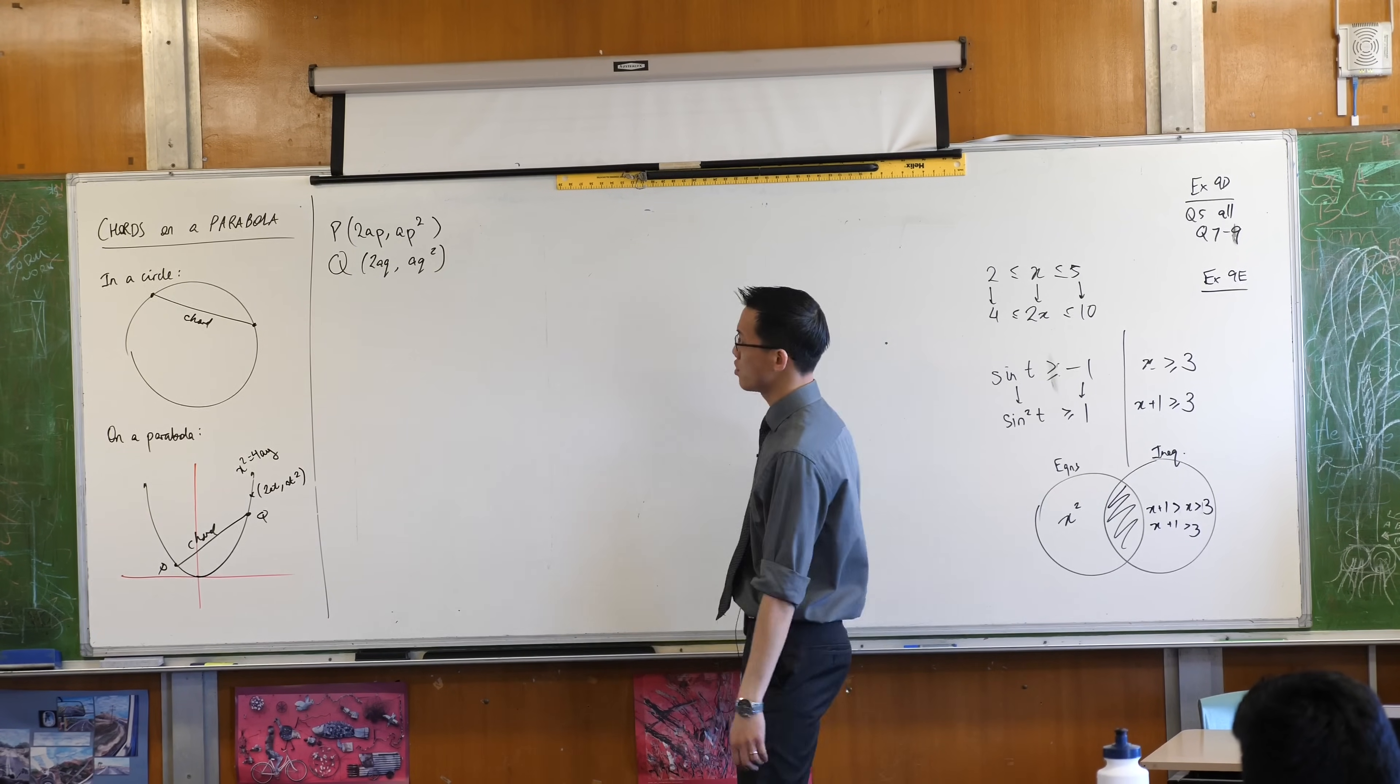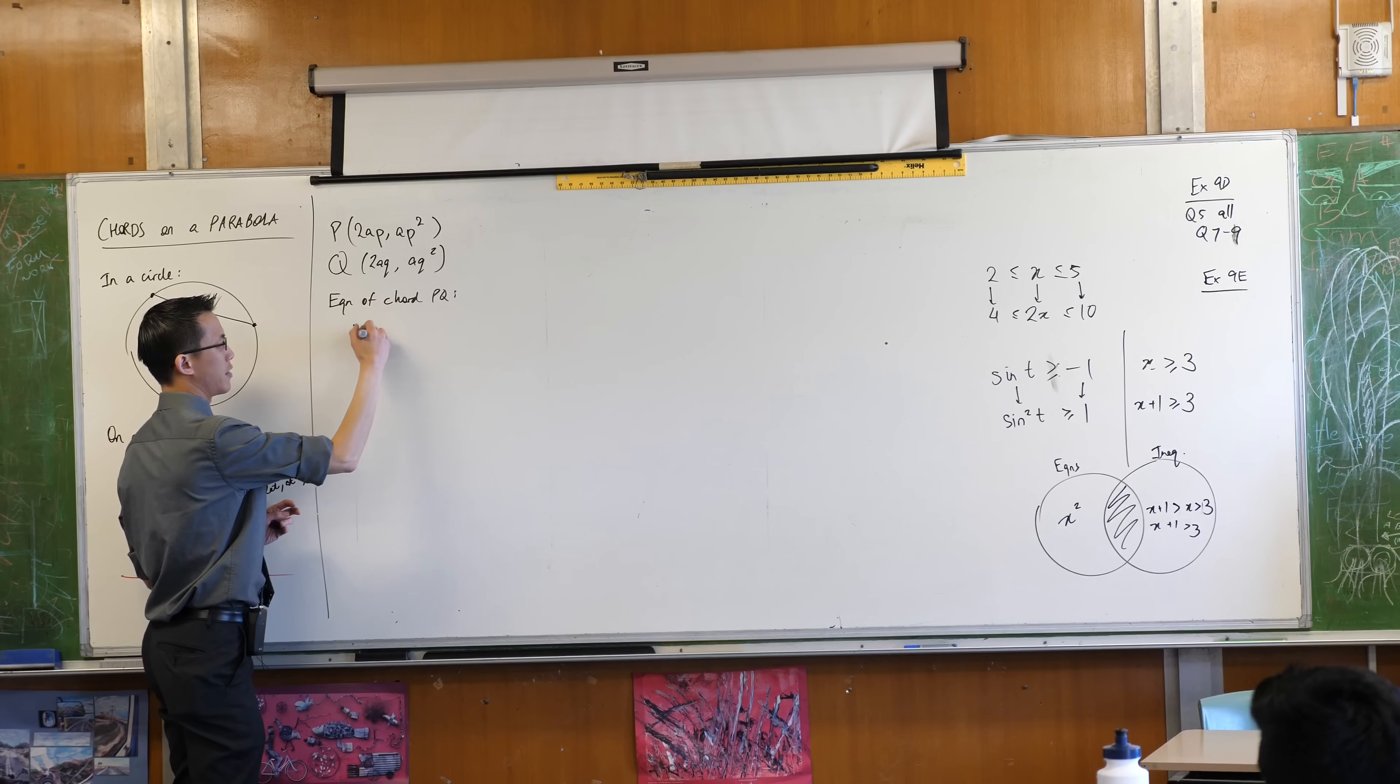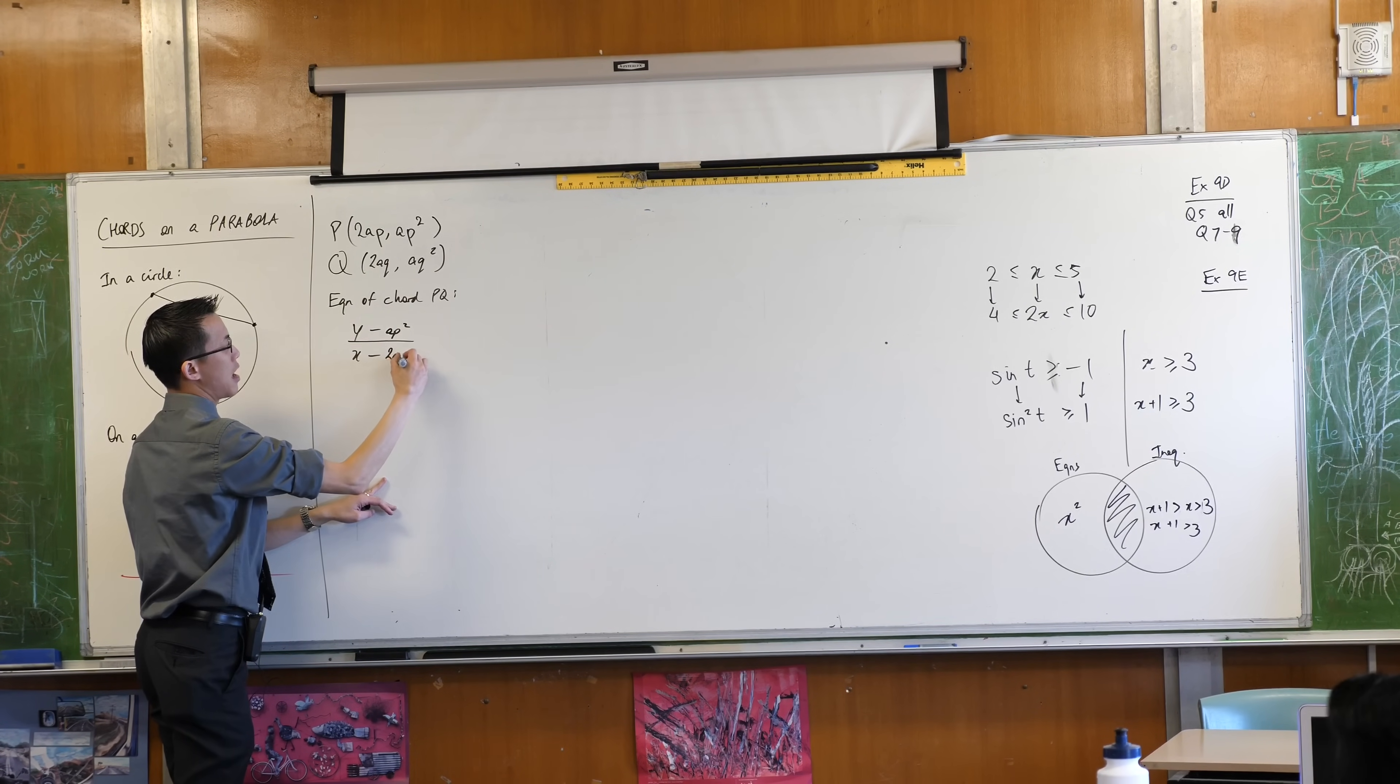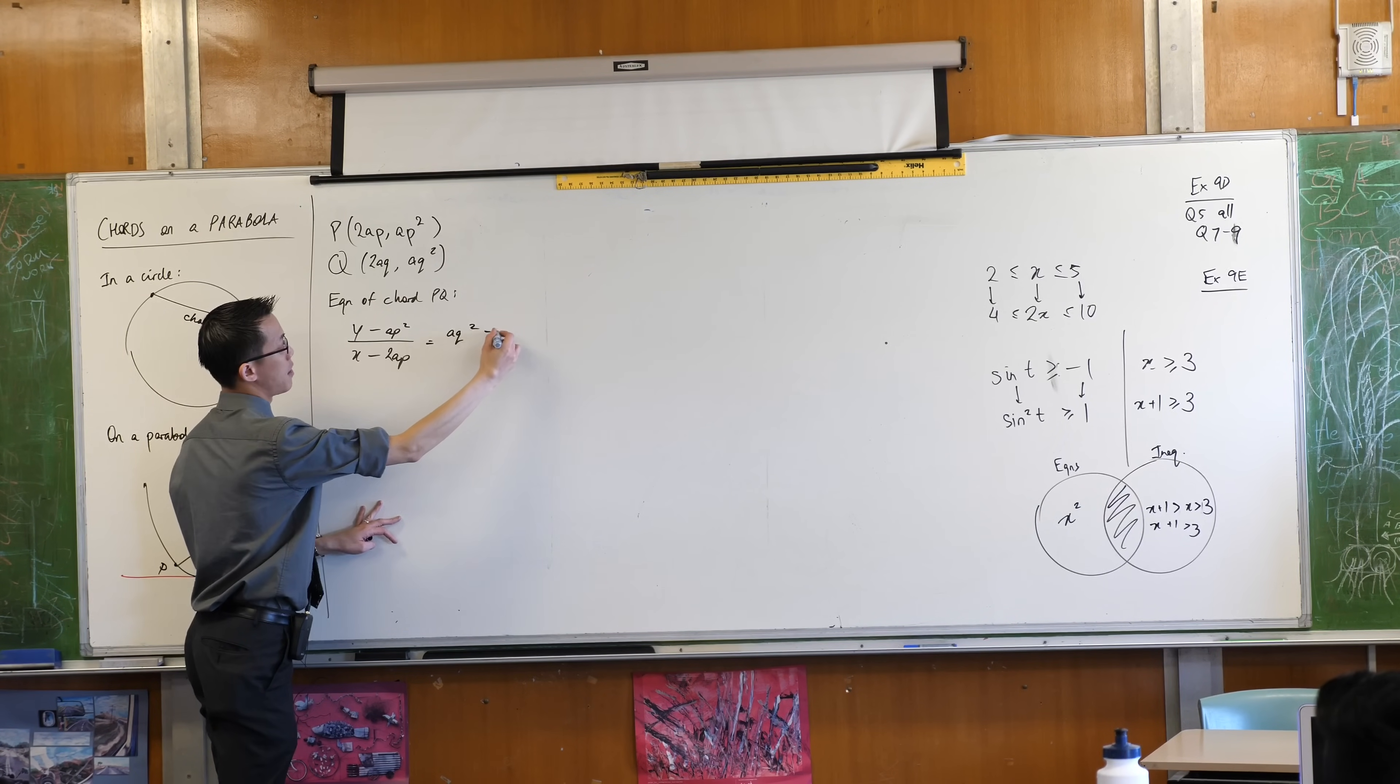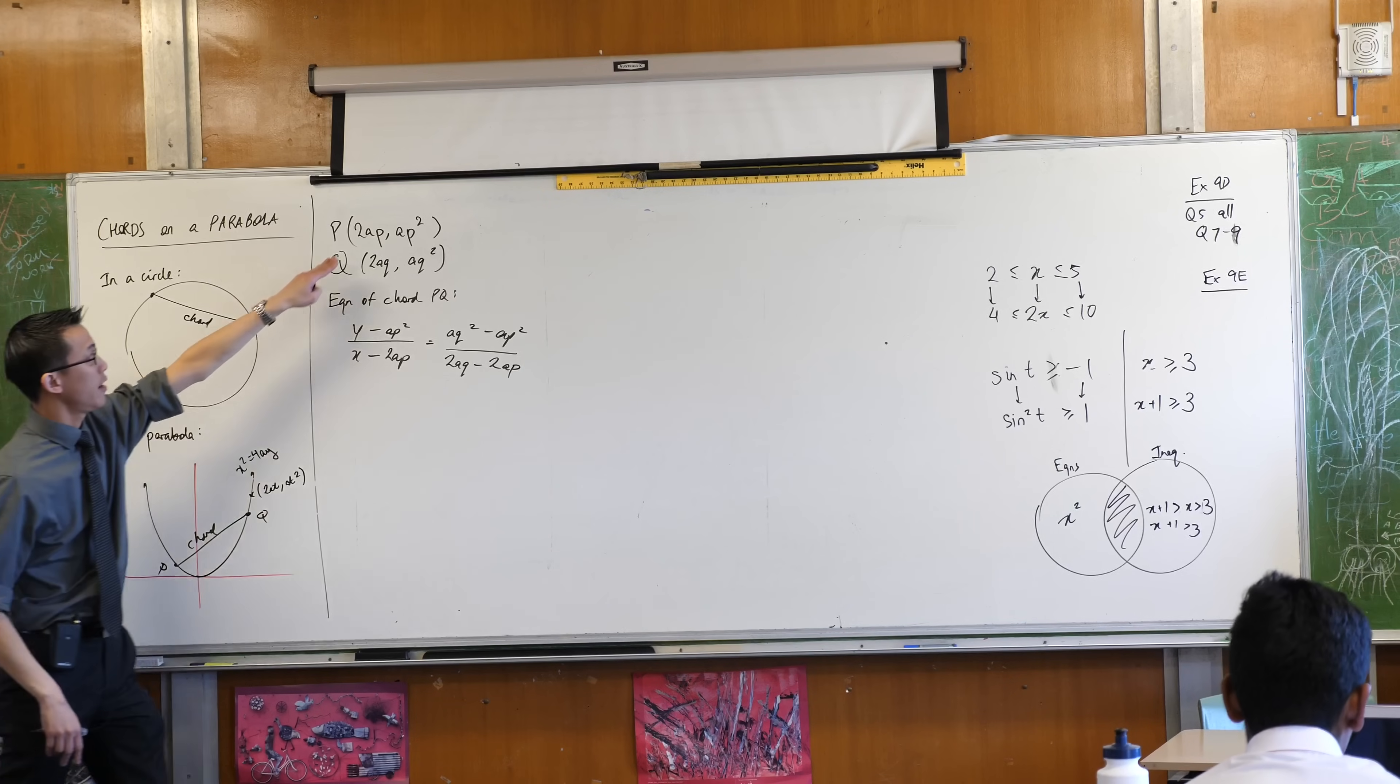And now you've just got two points, so you can use two-point formula to work out the equation of the chord, right? So equation of chord P cubed, okay? What's it going to look like? Well, the equation of a two-point sort of line thing looks like this, right? y minus y1, x minus x1. Let's see, let's call this one x1, y1. So that would make this up here and this down here. Is that okay? What are you going to get on the right-hand side? Yep, so instead of y minus y1, it'll be y2, y2 minus y1. How does that look? Is that okay? All divided through by x2 minus x1.